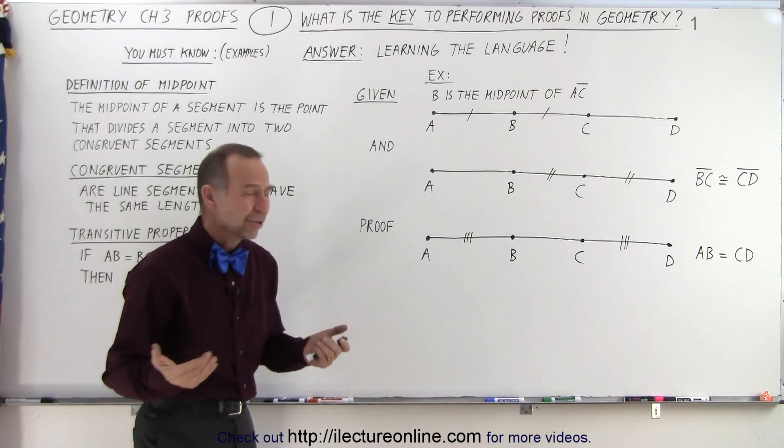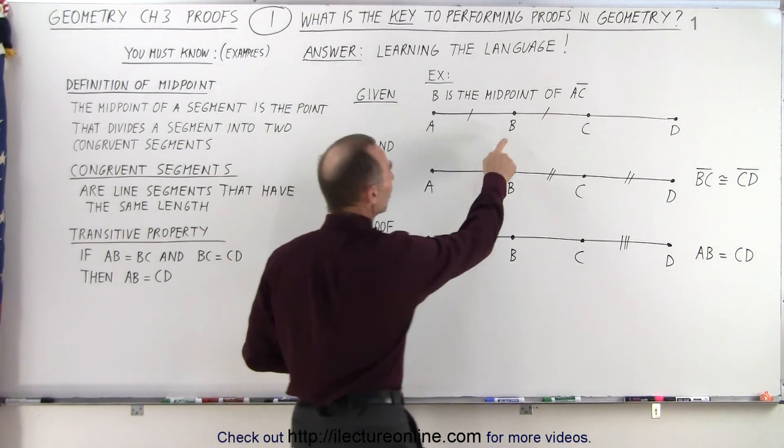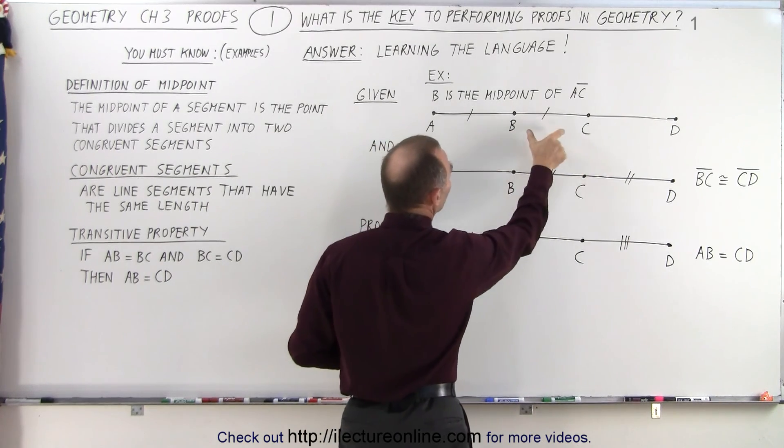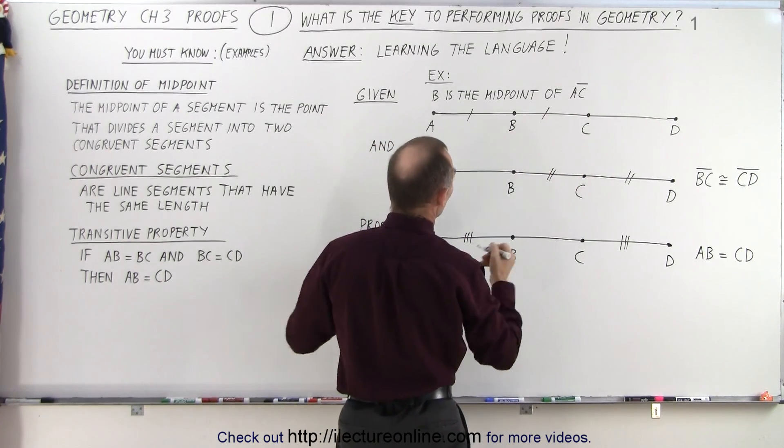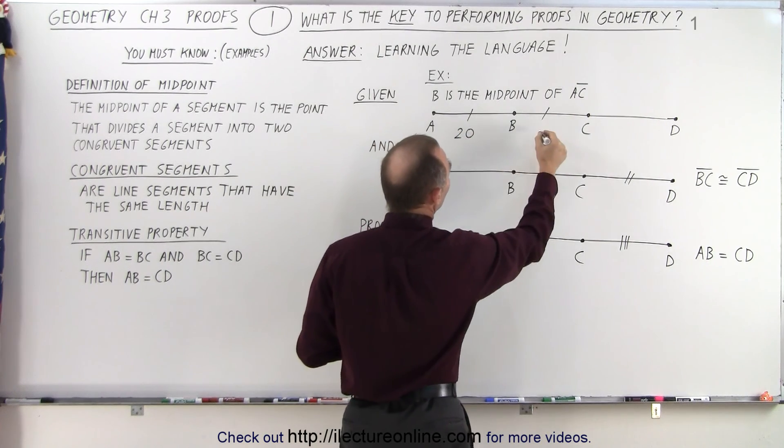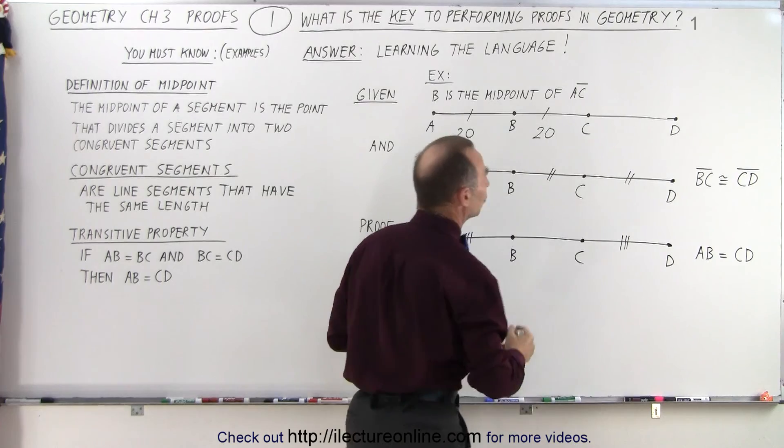Well, if you think about it, that makes a lot of sense. If B is in the middle between A and C, then the length from A to B must equal the length from B to C. So, let's say, for example, that the length from A to B is 20. That means that the length from B to C must be 20 as well.